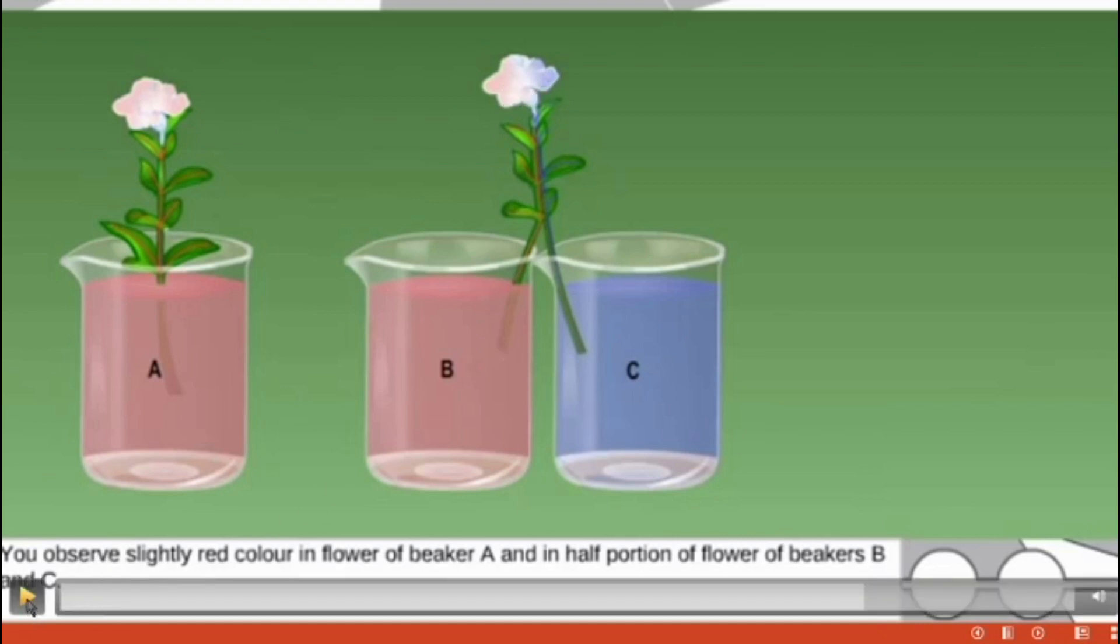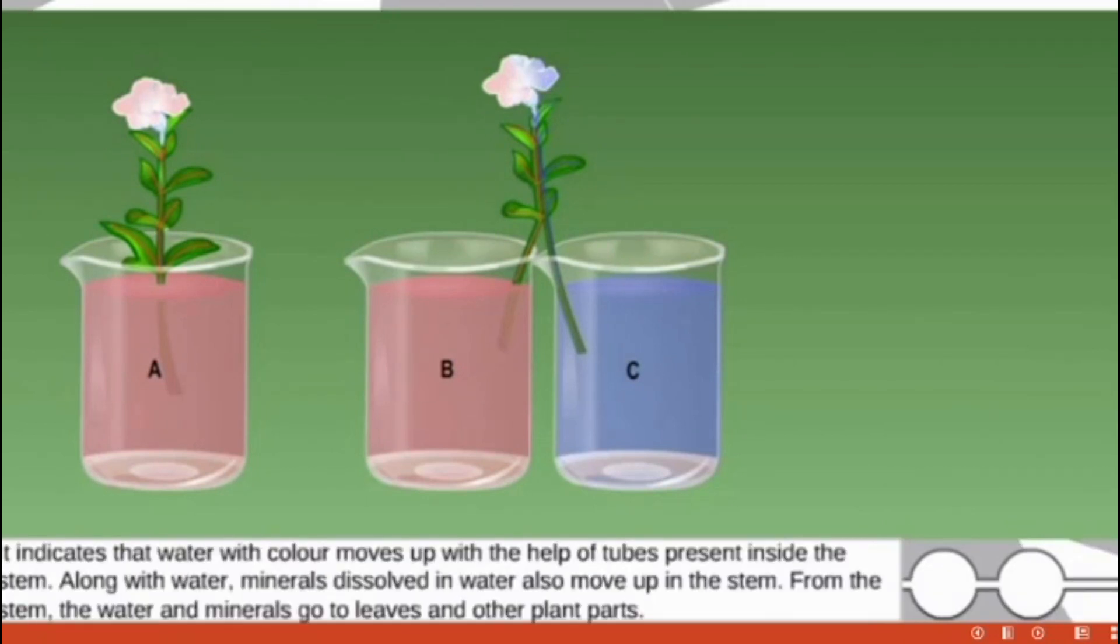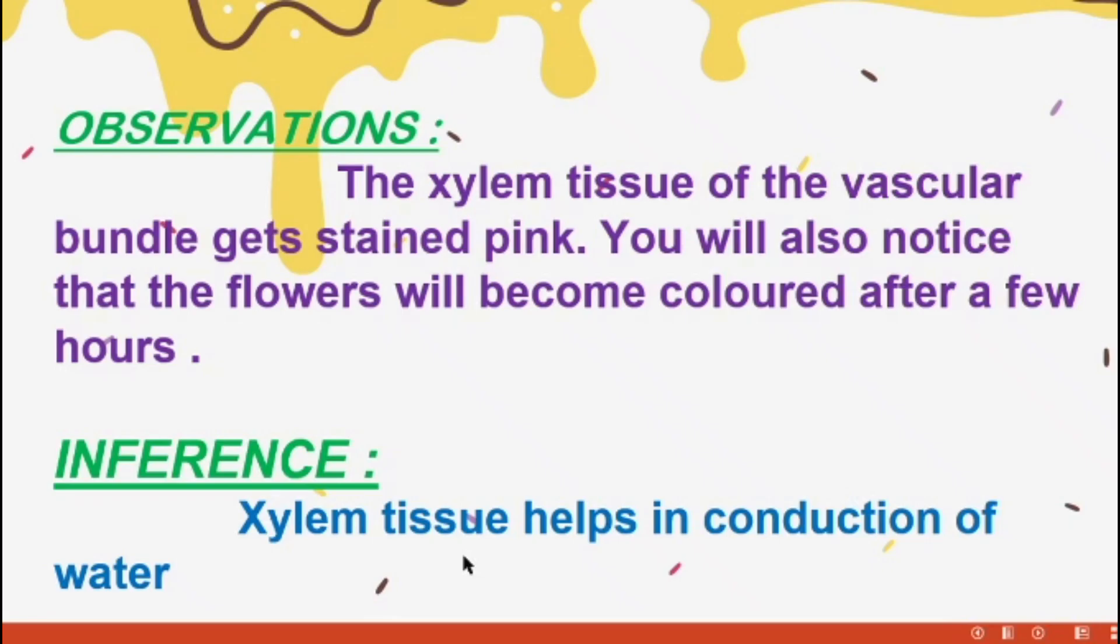So it shows what is the result we know. The water transports mainly with help through the xylem tissues. This experiment observation is: the xylem tissues of the vascular bundle gets stained. Vascular bundle means xylem and phloem. Here xylem tissues are stained with a pink ink or pink indicator. So xylem conducts and transports the water. You will also notice that the flowers will become colored after a few hours.